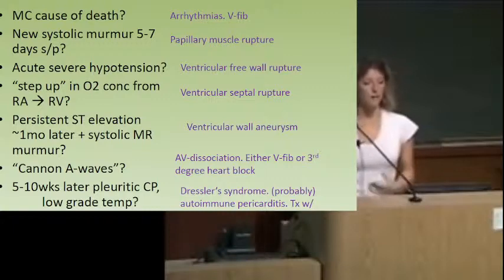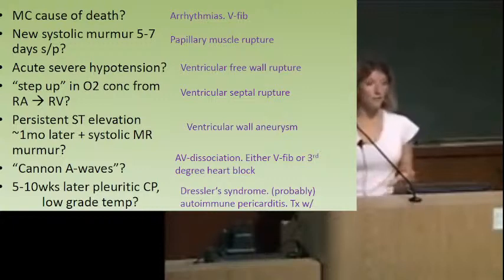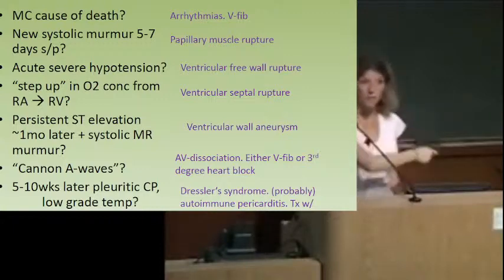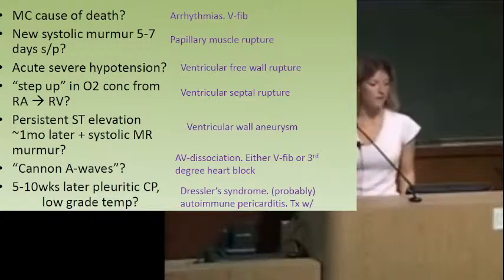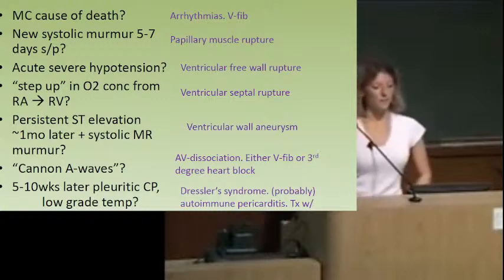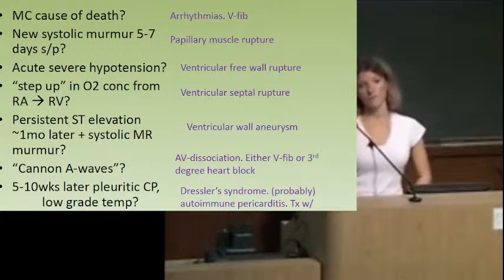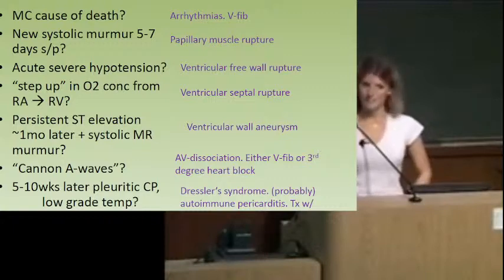If there's more oxygen in the right ventricle than in the right atrium, that means oxygenated blood from the left side is crossing over to increase the oxygen content. If you see persistent ST elevation a month later with a systolic mitral regurgitation murmur, that's a ventricular wall aneurysm — not Dressler syndrome.